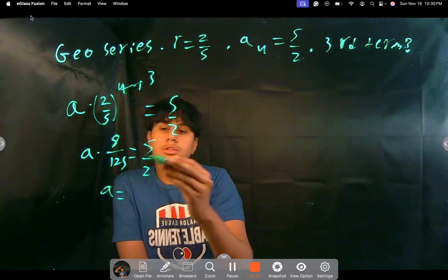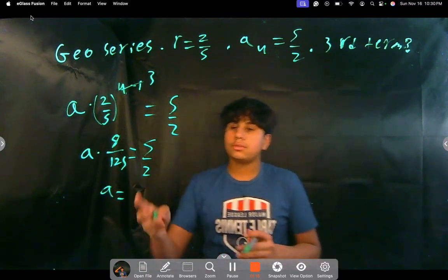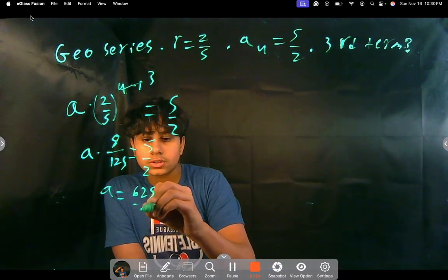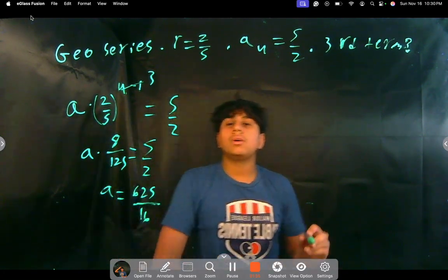So a equals the reciprocal of 8 over 125, which is 125 over 8, times 5 halves, which is 625 over 16. So now we know what a is.